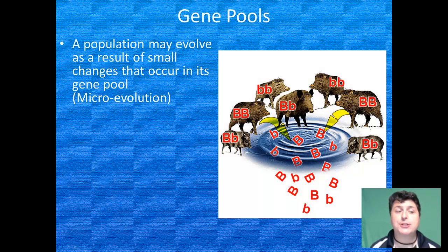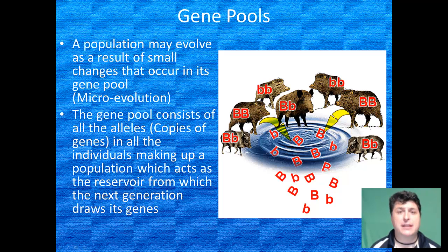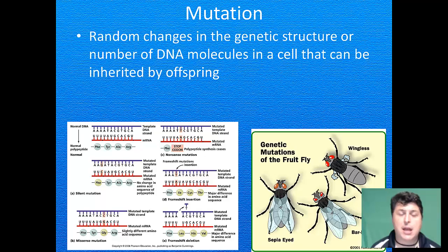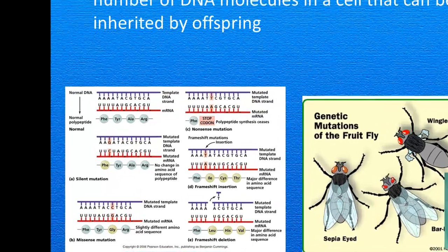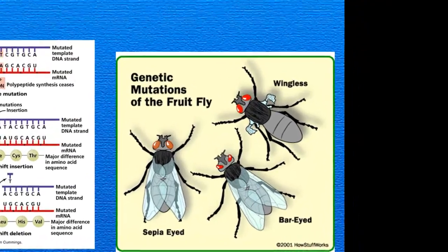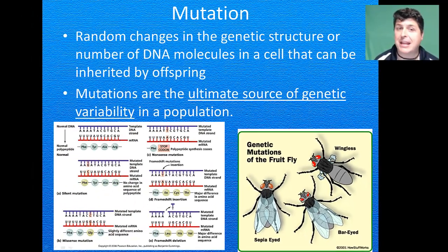A population may evolve as a result of small changes that occur in its gene pool — this is known as microevolution. The gene pool consists of all of the alleles, all of the copies of genes in all of the individuals making up a population. The gene pool acts as a reservoir from which the next generation will draw its genes. One way that a gene pool can change is as a result of mutations — random changes in the genetic structure or number of DNA molecules in a cell that can be inherited by offspring. Mutations can occur in any cell, but only those taking place in reproductive cells are passed to offspring. Many scientists believe that mutations are the ultimate source of genetic variation in a population.